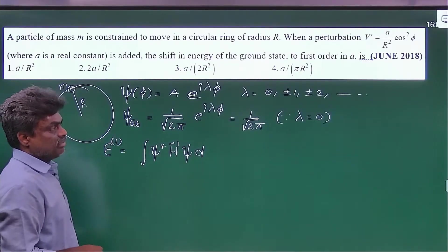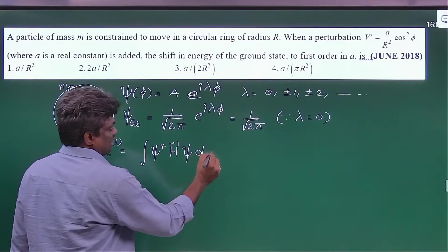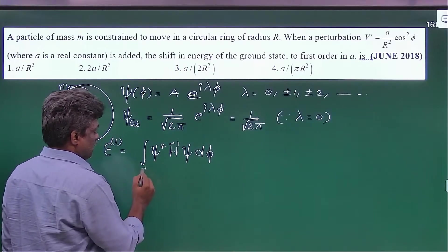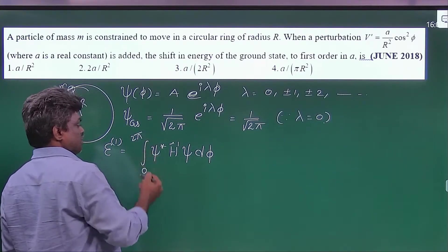Here the variable is phi. That's why this is d phi, and the phi limits are from 0 to 2 pi.